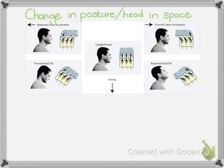The center photograph shows an upright posture where the otoliths — those small stone-like structures attracted to gravitational pull — are floating directly above the hair cells with no movement. However, if you change your posture or head position, your utriculus and sacculus sense this. In a backward linear acceleration — like swinging backwards — your hair cells bend forwards and the otoliths move forward, which is how you sense that your body is moving backwards.